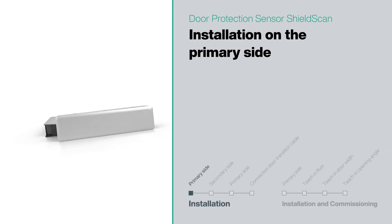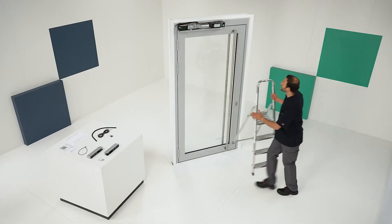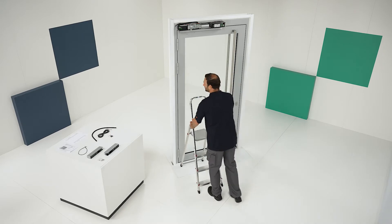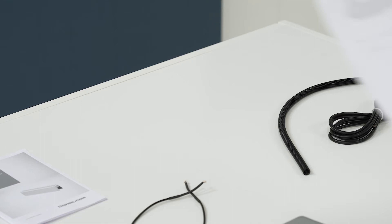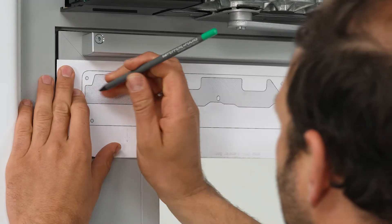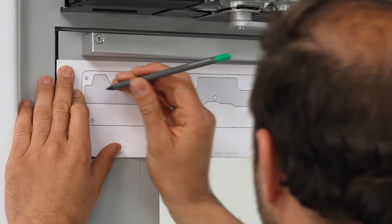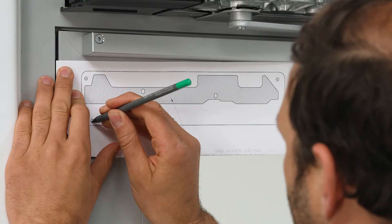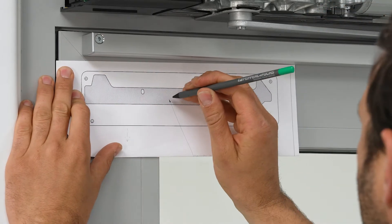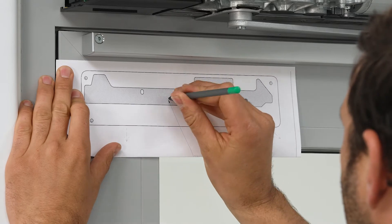We will now start with the installation. To start the installation process, use the drilling template to determine the mounting positions on the door frame. While doing so, be sure to maintain enough distance from the closing edges. Make the hole for the door transition cable in the hatched area on the drilling template.